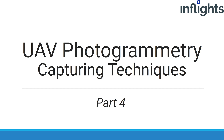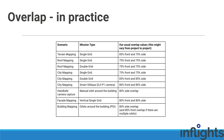We all know that photogrammetry results can be only as good as the dataset quality — there is no way around that. Here you will learn some more theory on example scenarios. But first, let's take a look at different overlap levels that we use. The theory about overlap was explained in previous videos. At inflights, we tested a couple of different approaches, and here is an overview of overlap values that we usually use.